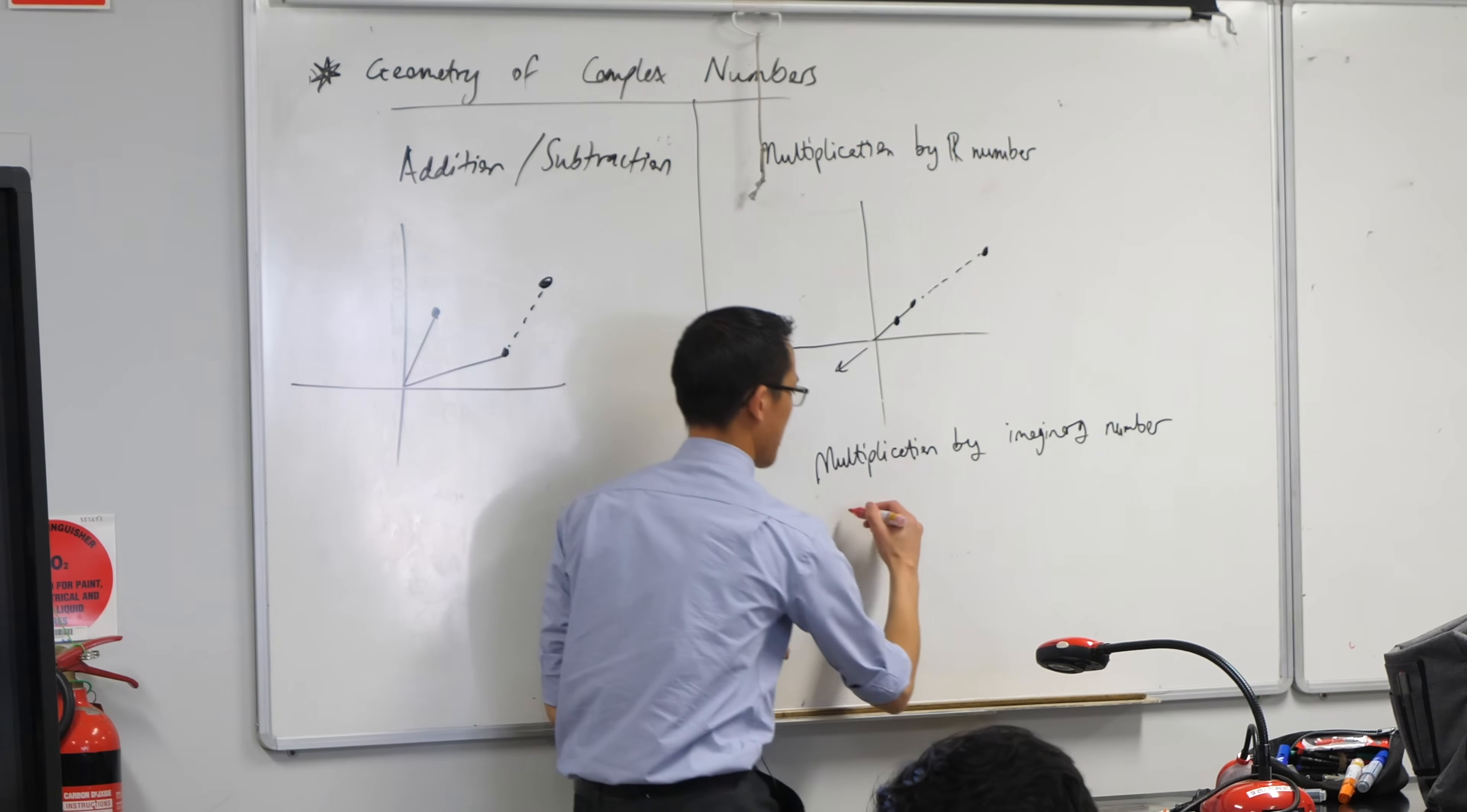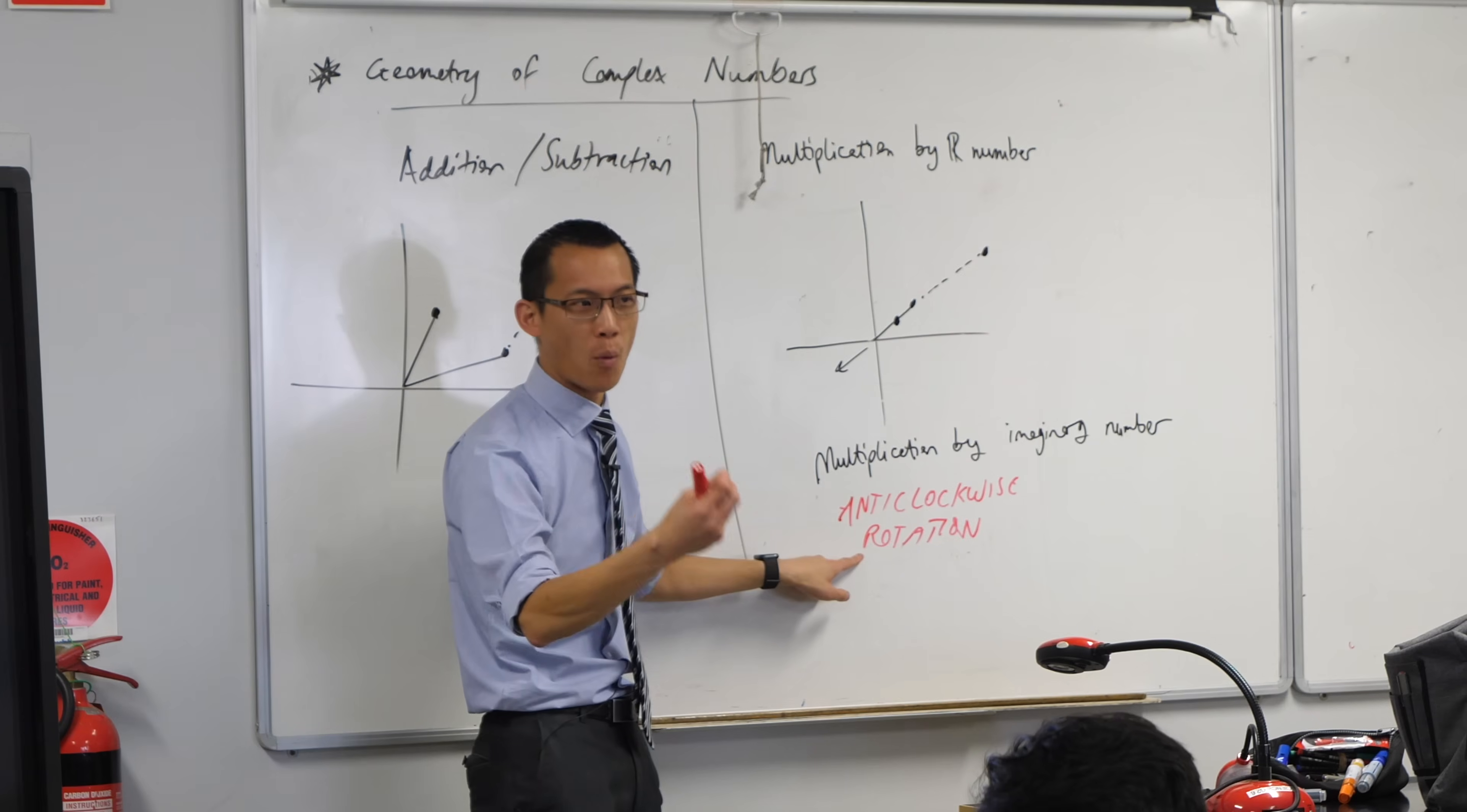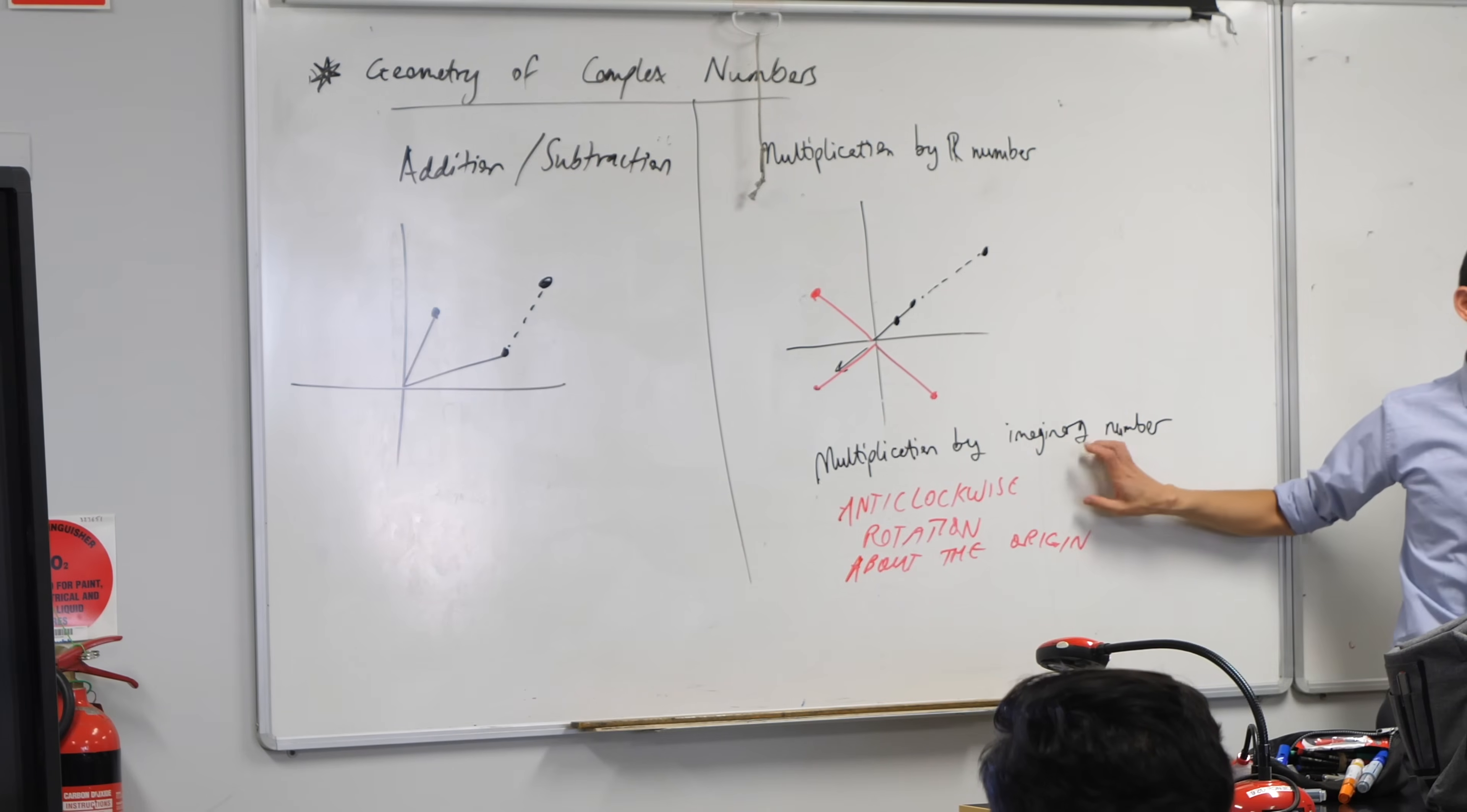Multiplication by an imaginary number gives us anti-clockwise rotation. And it's not just anywhere. I'm actually spinning it about the origin. Do you guys remember back in year 7? Rotation requires a point about which you rotate. And the point about which we're rotating is the origin. So we've got numbers like this, or this, or this. So this is what happens when we multiply by a real number or when we multiply by an imaginary number.